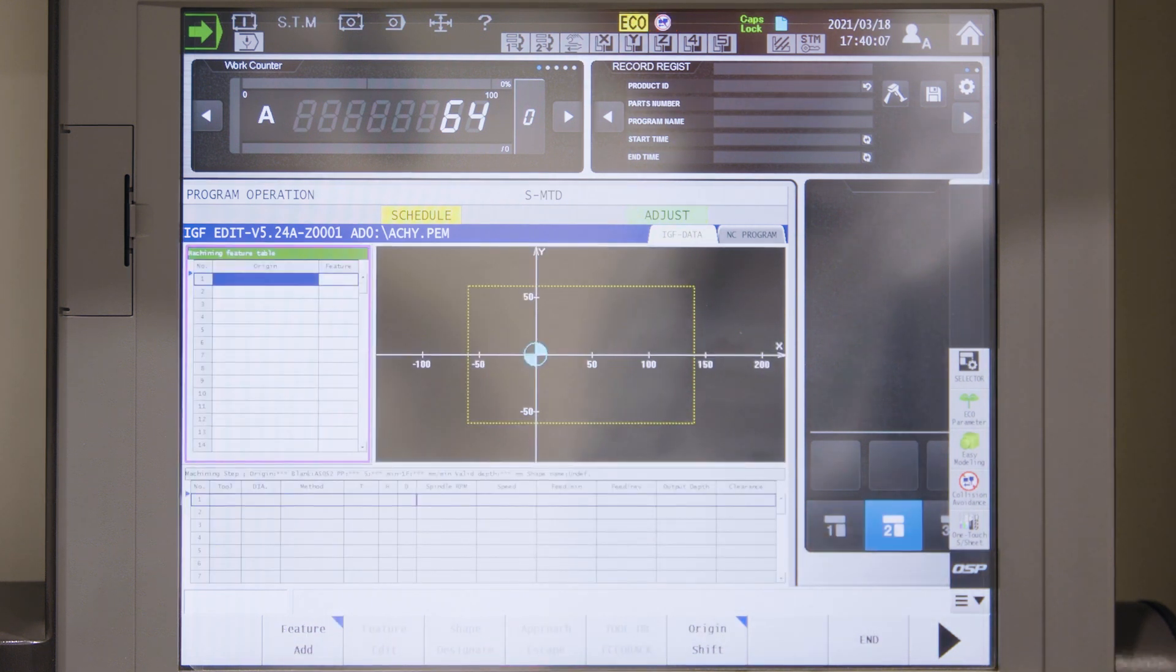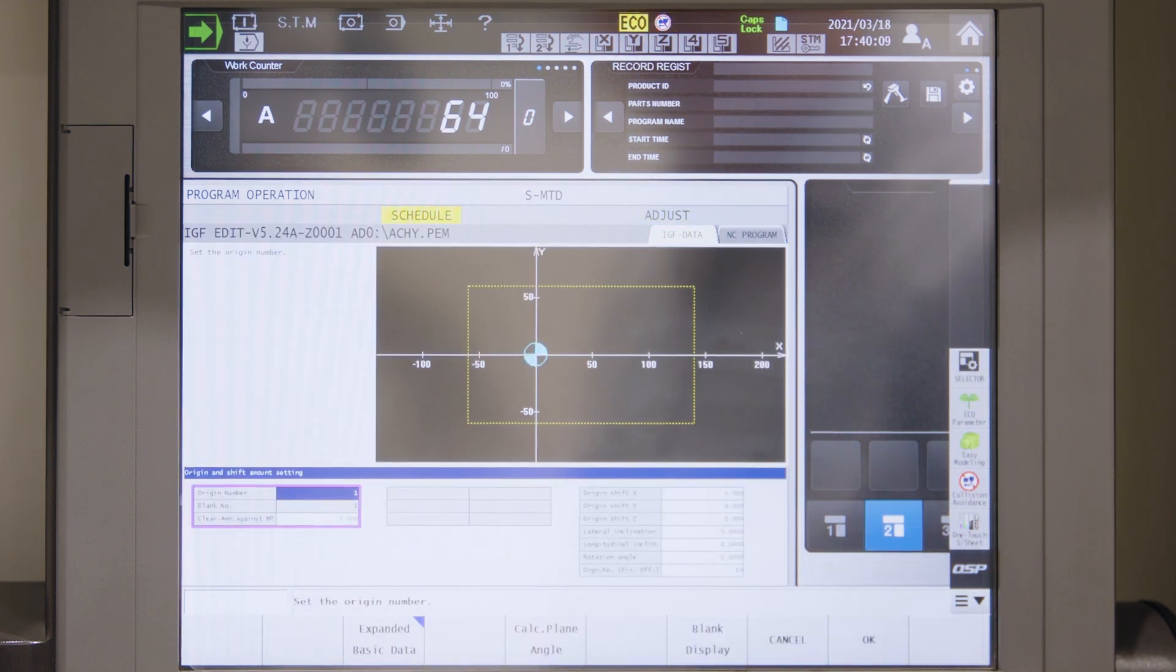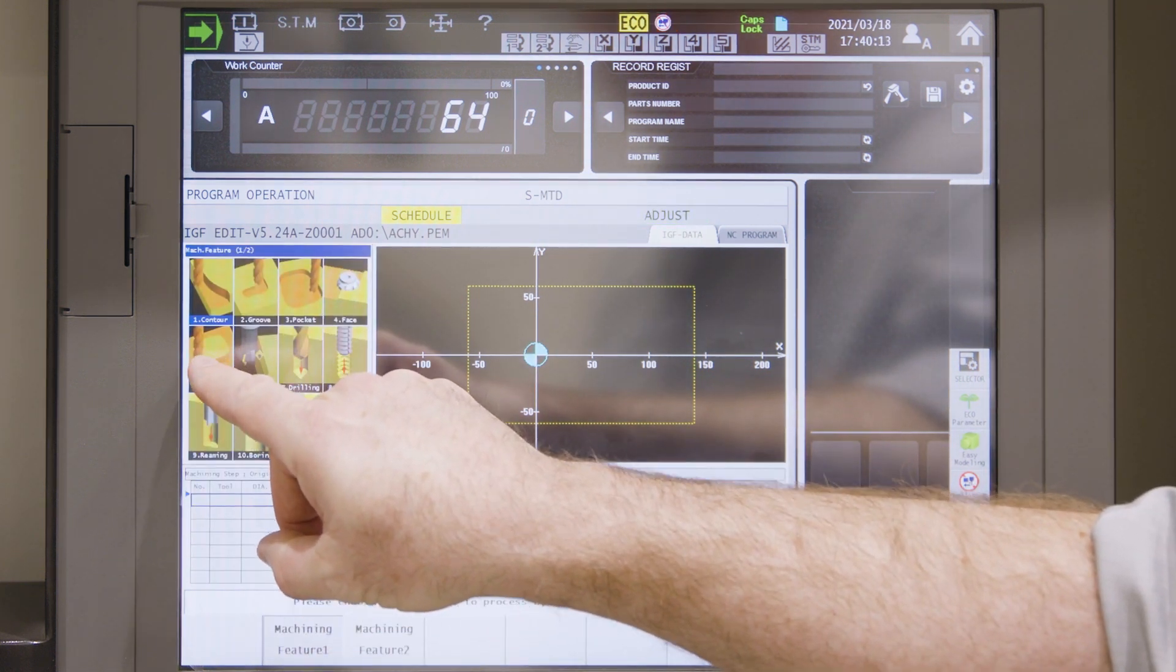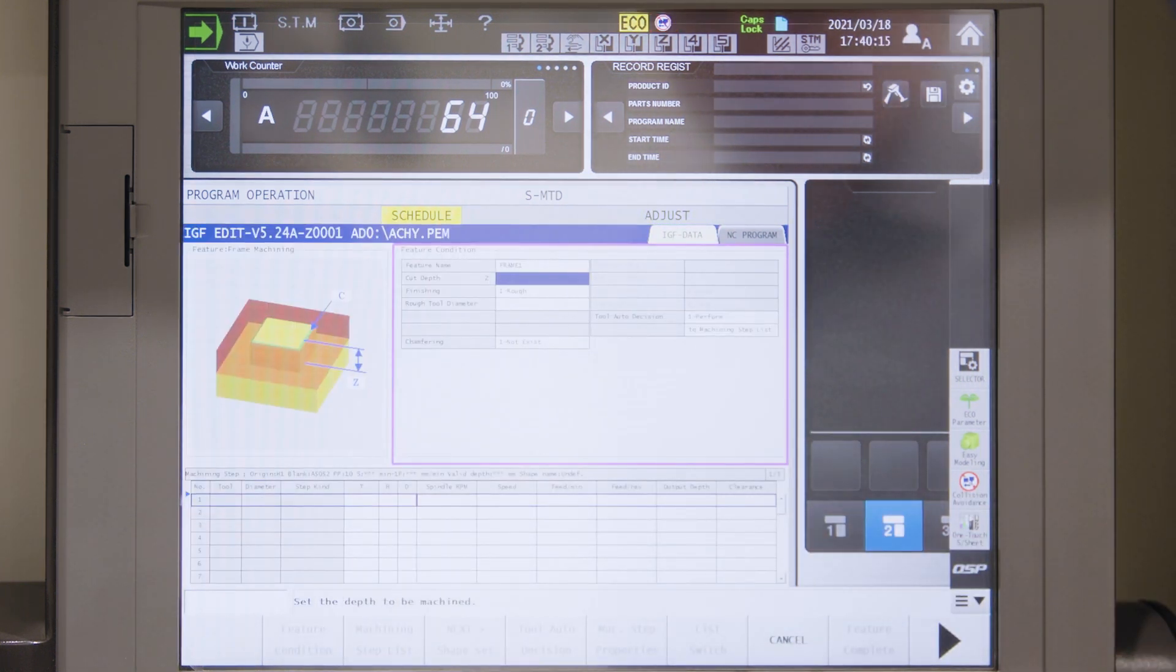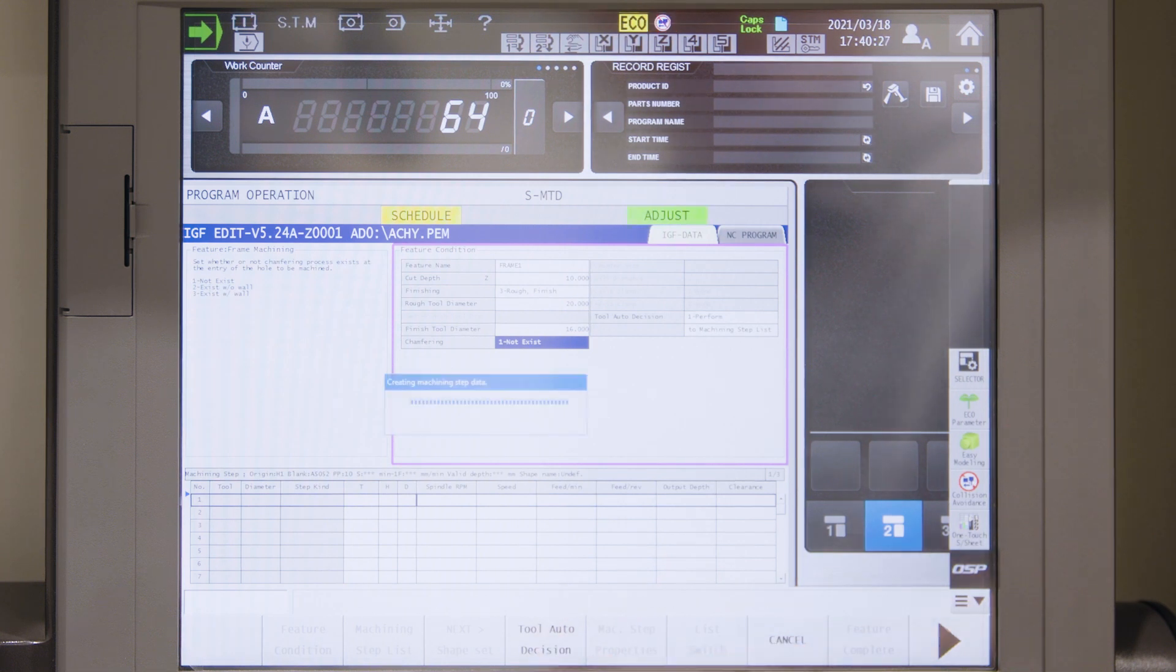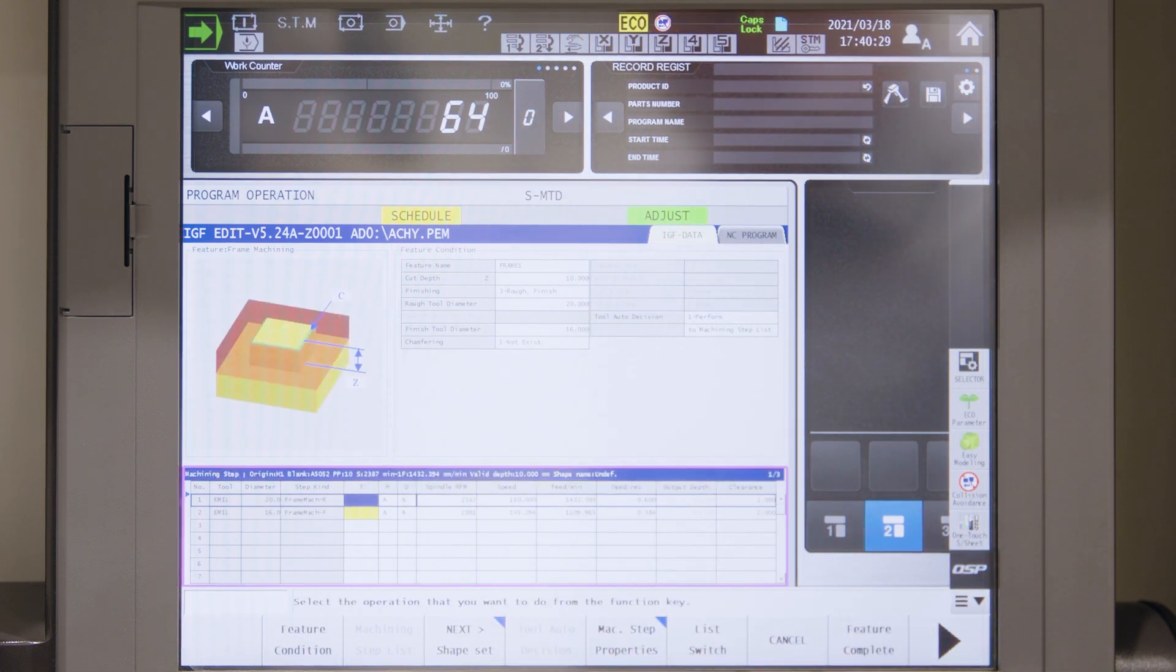Now I will decide my machining feature. I will add a new feature on the same reference point and I will use a frame machining feature. This frame machining feature should cut 10 millimeters deep and I would like to use roughing and finishing. My rough tool diameter is 20 millimeter. My finishing tool diameter is 16. And I will do an automatic tool decision which will automatically generate the cutting speeds and feeds for this material.